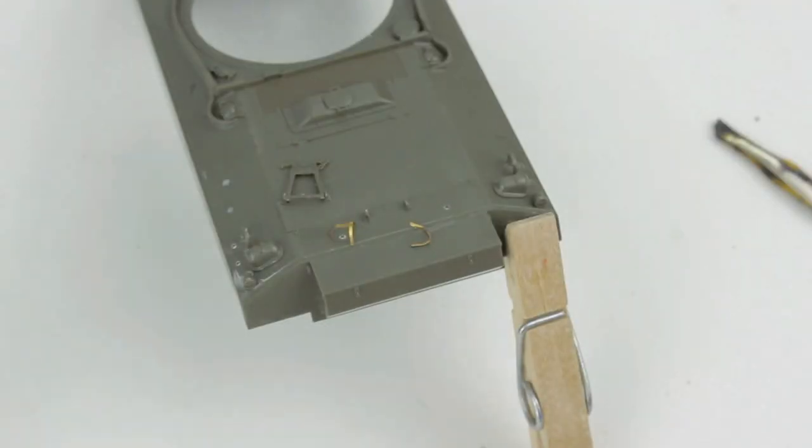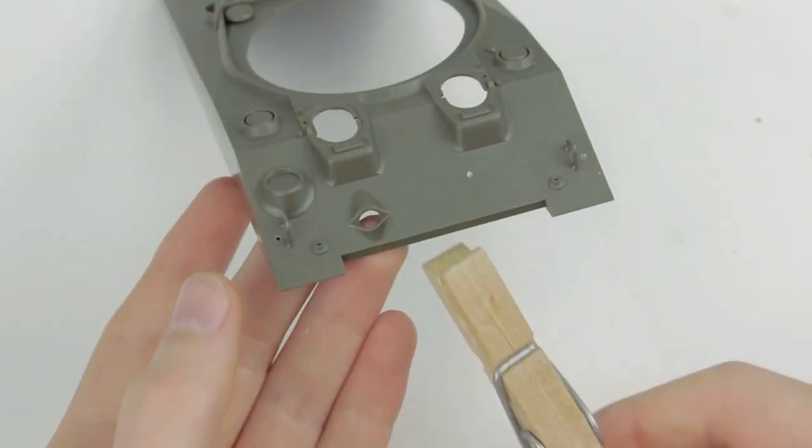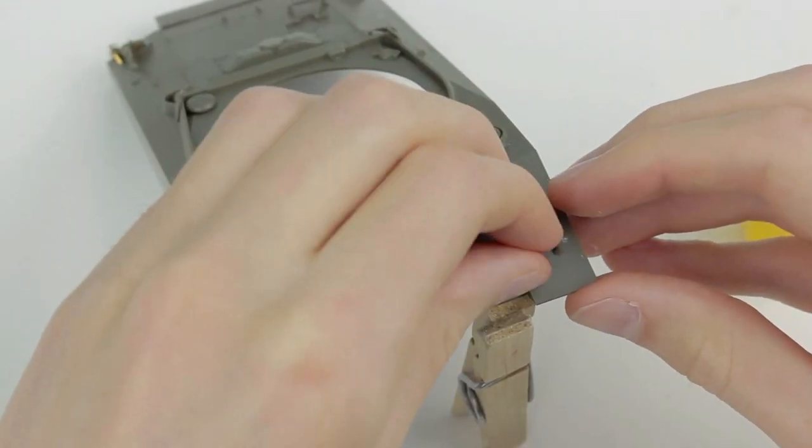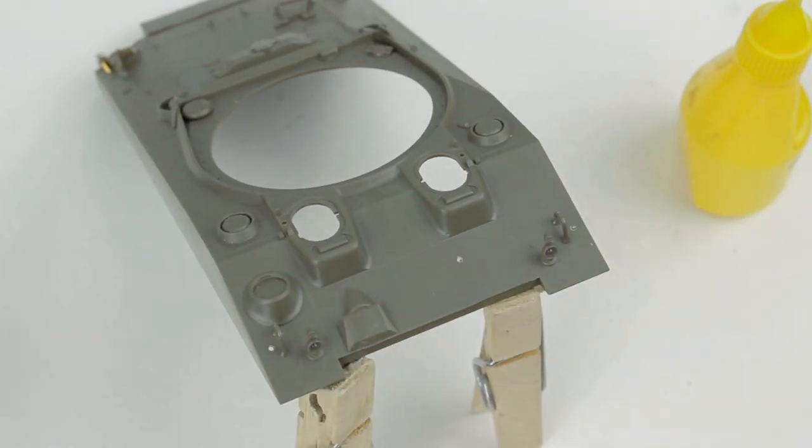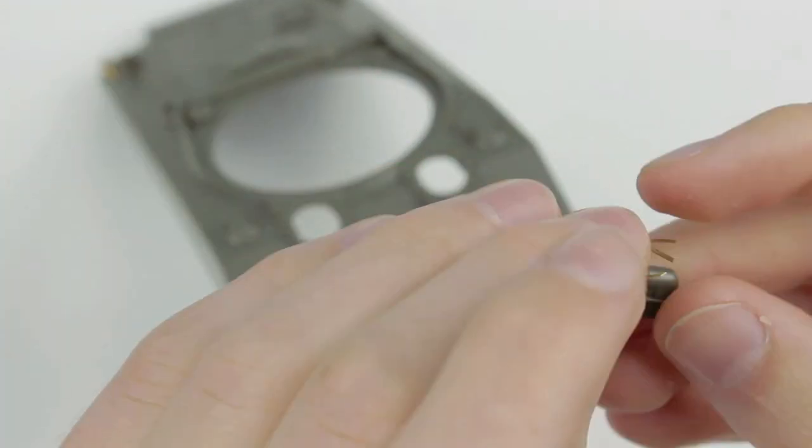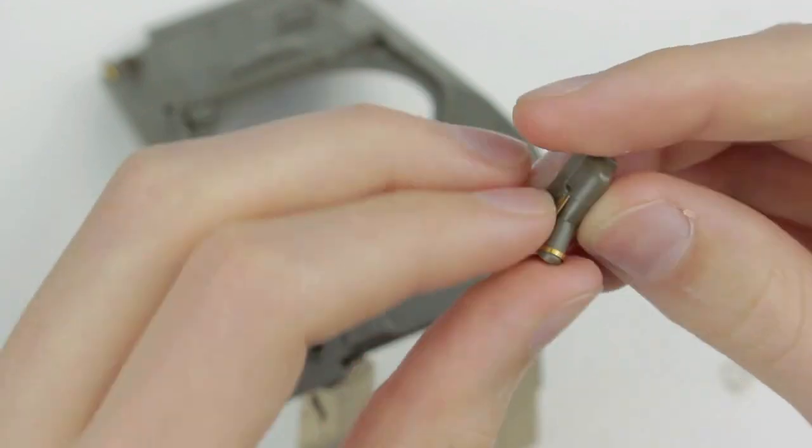The sprue included a handy tool for shaping the photo etch correctly. The headlights include clear plastic lenses which I will add after the model has been painted. Again, I went with the photo etch headlight covers instead of the plastic ones and secured them in place with PVA glue.